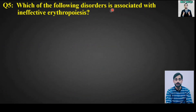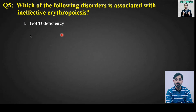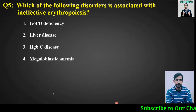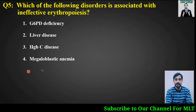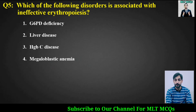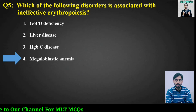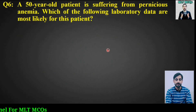MCQ number 5: Which of the following disorders is associated with ineffective erythropoiesis? Options are G6PD deficiency, liver disease, hemoglobin C disease, or megaloblastic anemia. The right answer is option number 4: megaloblastic anemia.